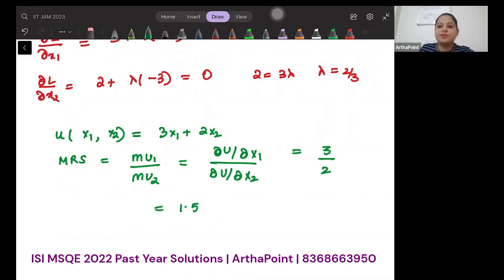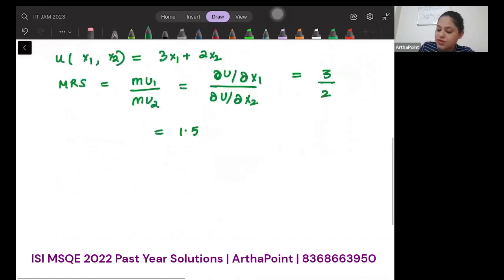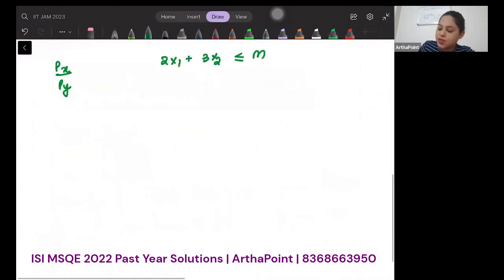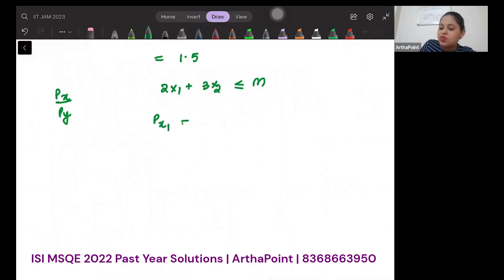So my MRS will be 3 by 2, which is 1.5. Now let's find the price ratio. The budget line is 2x1 plus 3x2 less than equal to M, the income of the consumer. So Px1 is 2, Px2 is 3. Therefore Px1 by Px2 will be 2 by 3, which is 0.67.